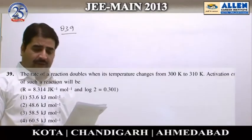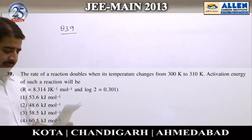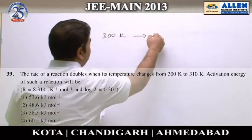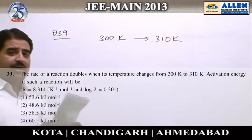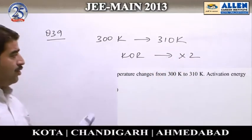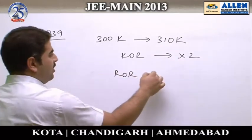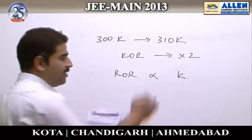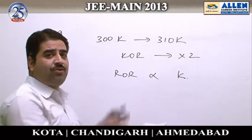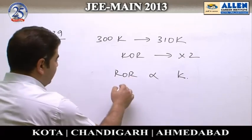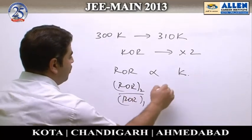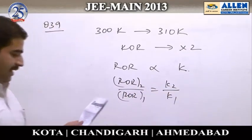Question number 39 is based upon chemical kinetics. We are given that on increasing temperature from 300 Kelvin to 310 Kelvin, the rate of reaction has doubled. We assume that the rate of reaction for any order is directly proportional to the rate constant, since concentration is assumed constant. So the ratio of the rates at two different temperatures equals the ratio of the rate constants, meaning K2/K1 = 2.